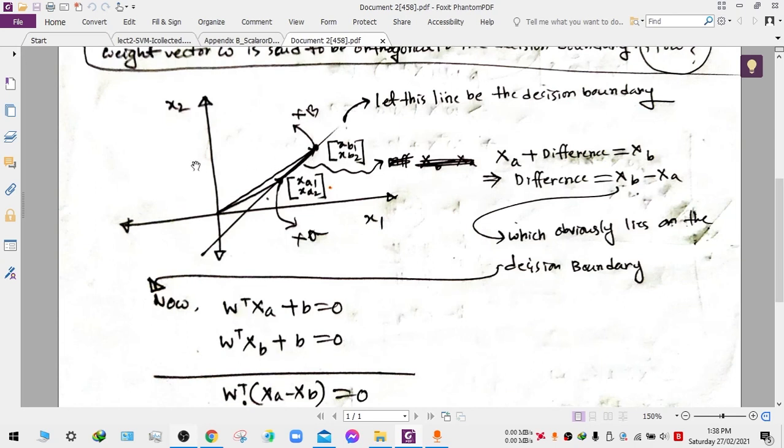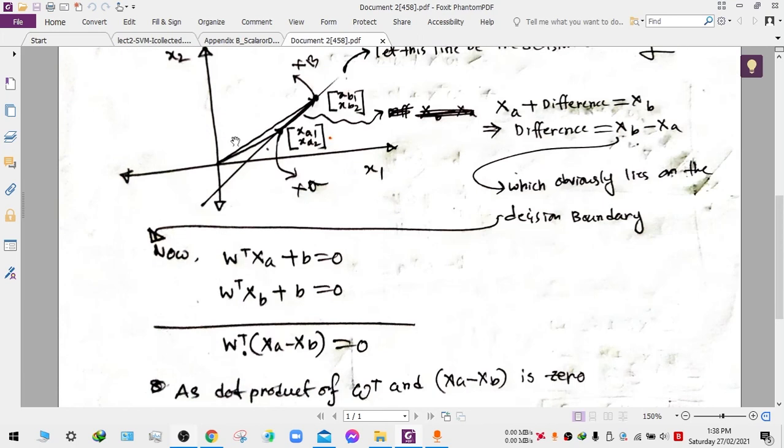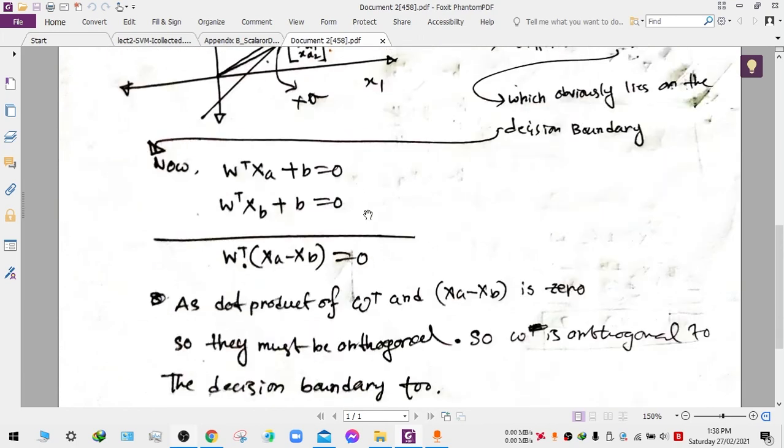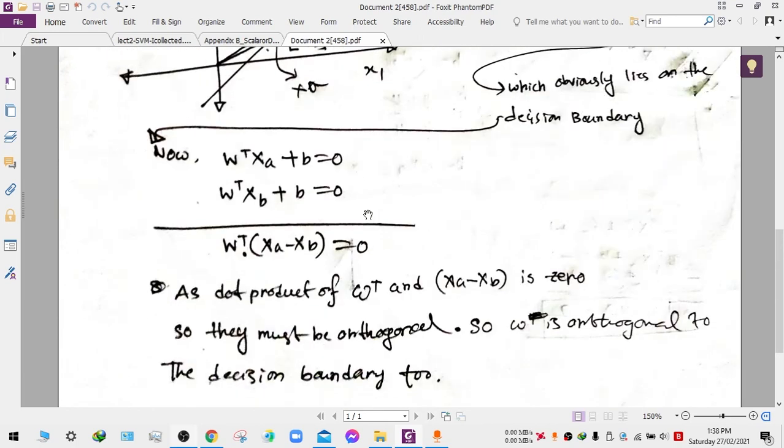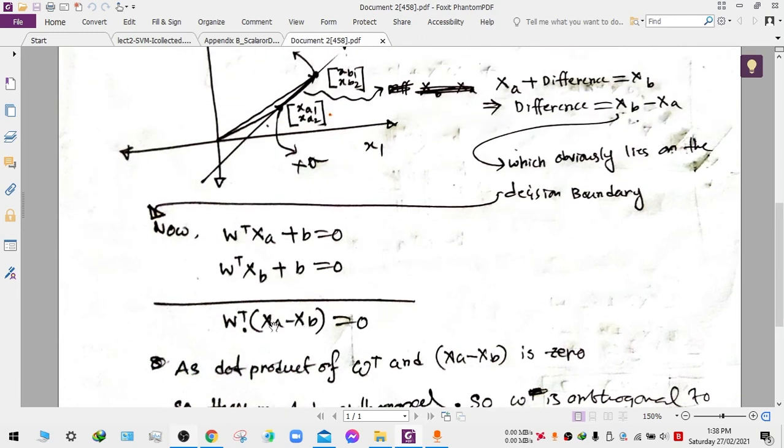I haven't shown the weight vector in here, but you can imagine it. So as the dot product of these two is zero, they are orthogonal. So if wT is orthogonal to this difference part, then w is also orthogonal to the decision boundary.